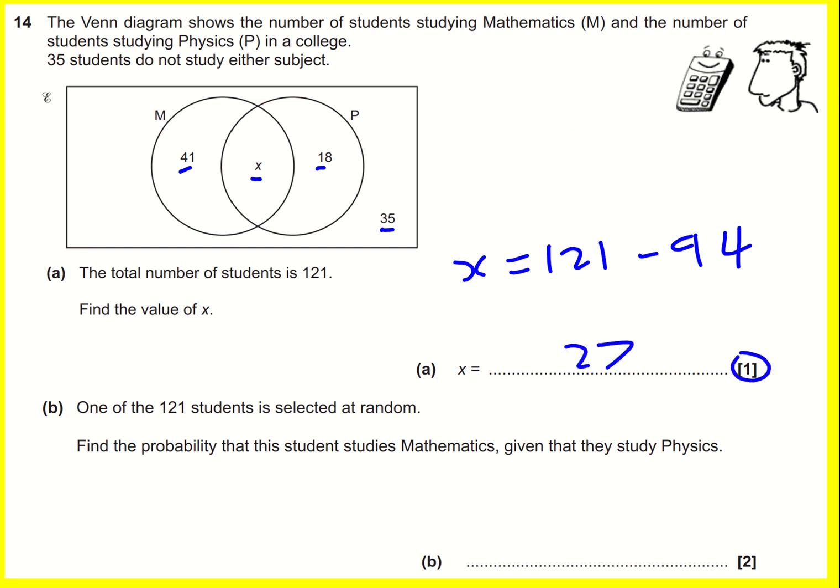One of the 121 students is selected at random. Find the probability that this student studies mathematics given that they study physics. This is the bit that can be confusing. Given that they study physics means they definitely study physics, and we can ignore these people who do not study physics because we're saying I'm picking somebody out of the students who study physics.